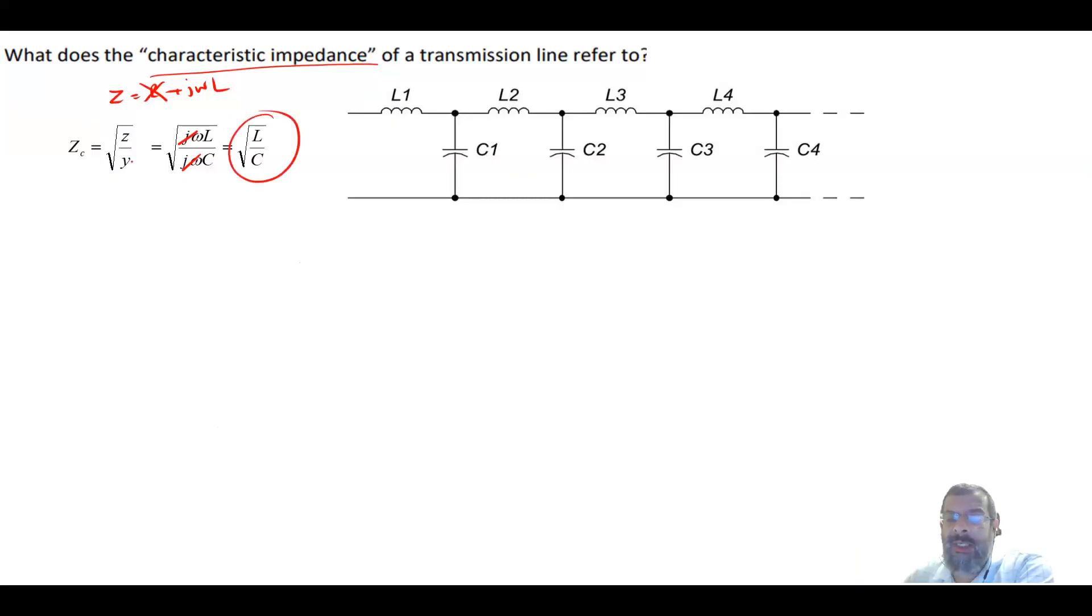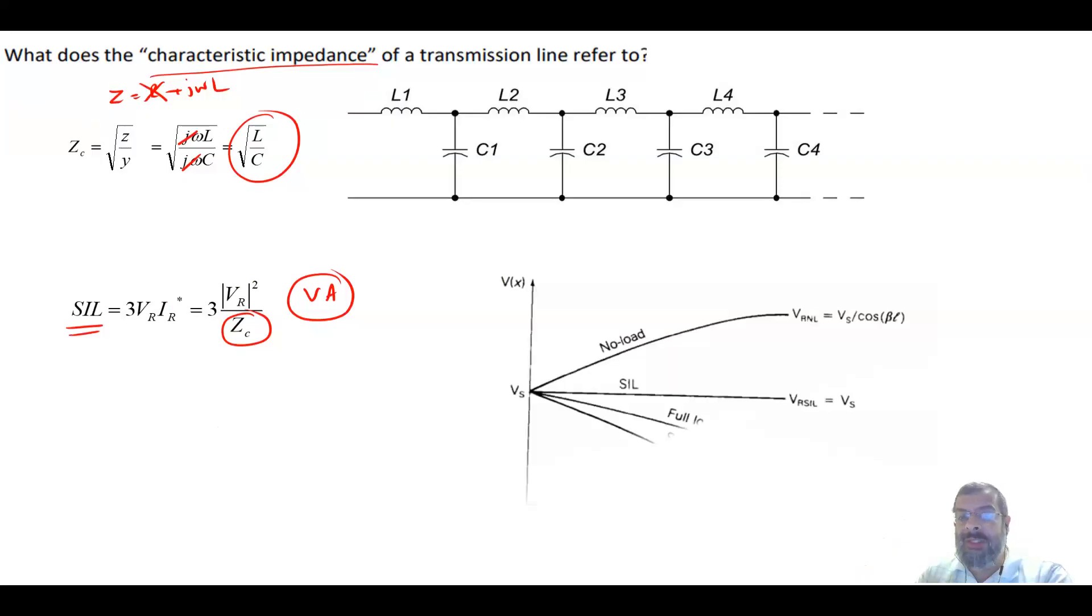What is it used for? There's something called the surge impedance loading. If your load is equal to three VR receiving voltage squared divided by this impedance, this is the surge impedance loading. This is in VA, in volt amps, so this is power. If that is the loading, now we'll see what will happen to the voltage profile according with respect to the distance. If we have a surge impedance loading, the profile would be flat between the sending to the receiving.